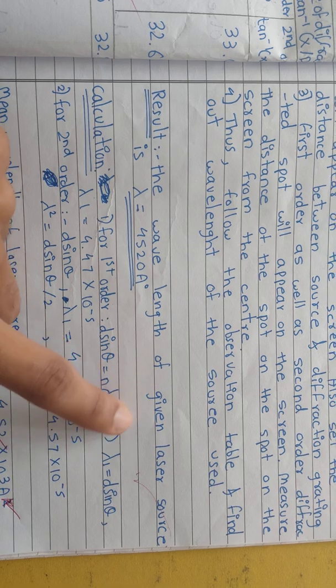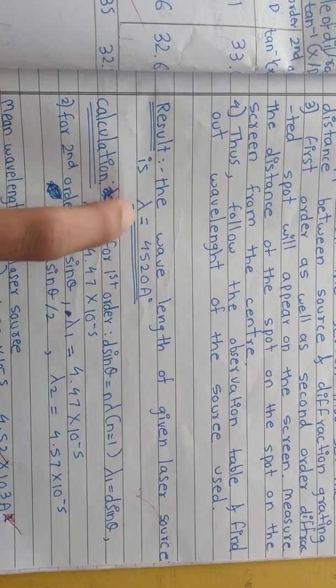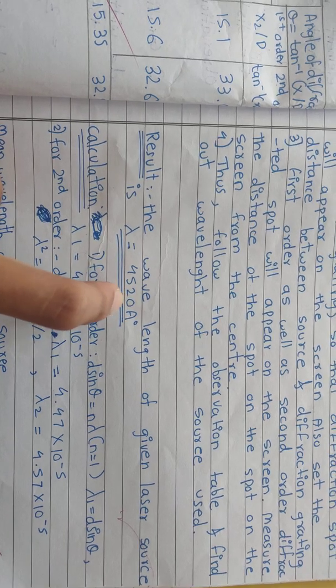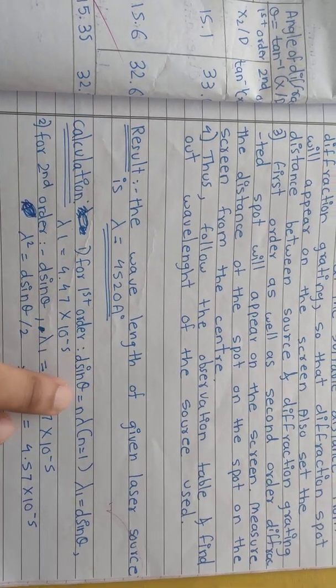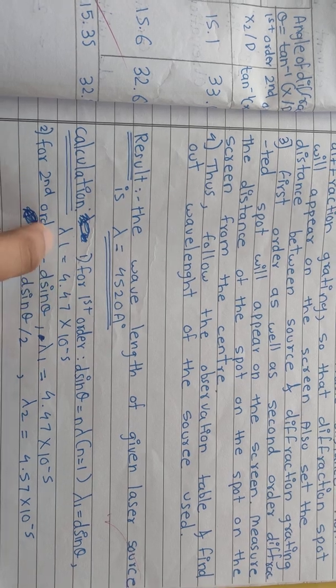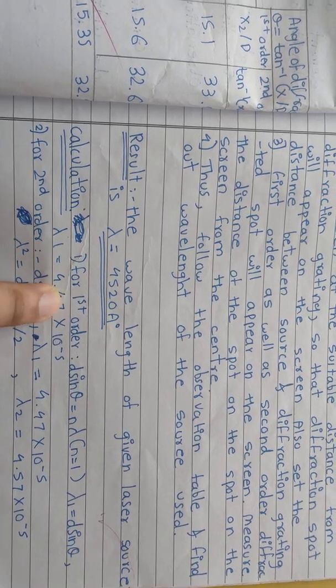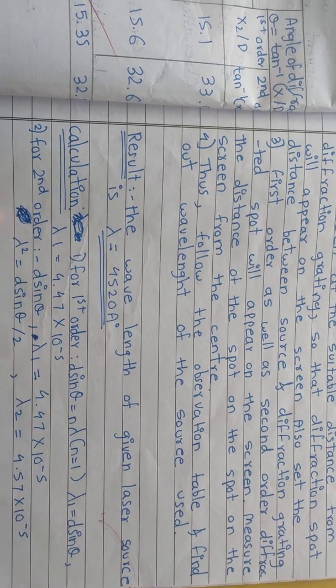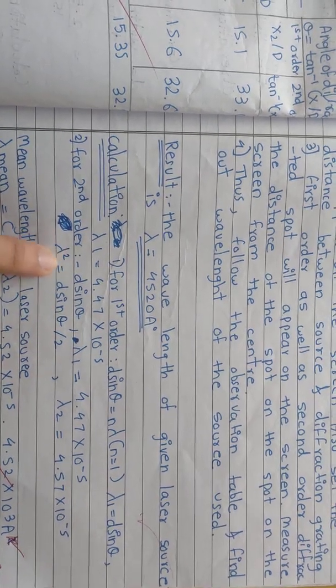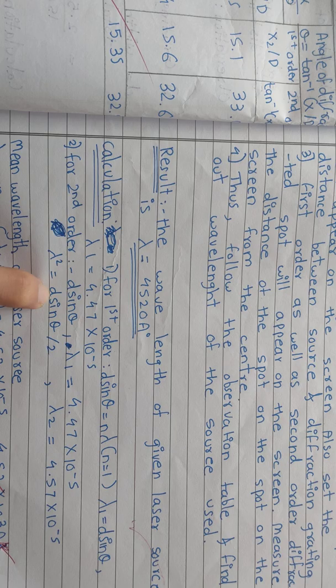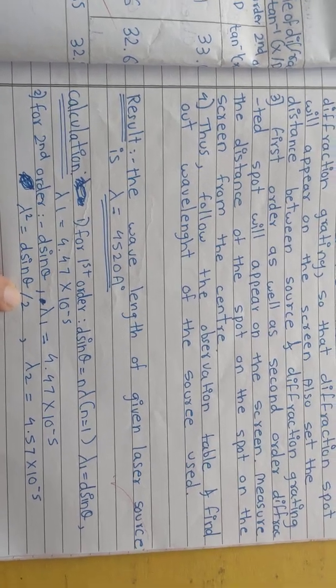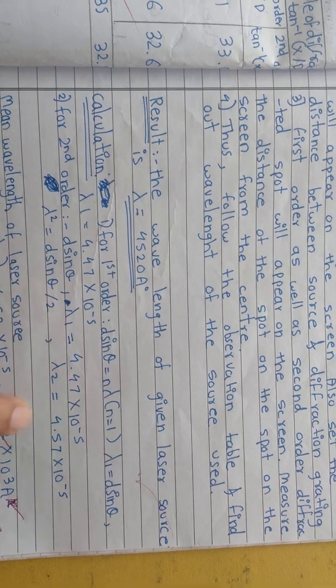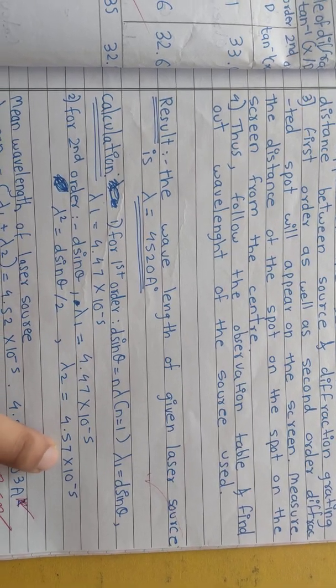The wavelength of the given laser source is lambda equals 5420 angstrom. For first order, lambda 1 equals 4.47 times 10 to the minus 5. Lambda 2 equals d sine theta divided by 2. After putting the values we get 4.57 times 10 raised to minus 5.